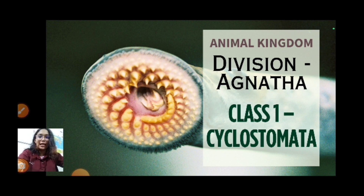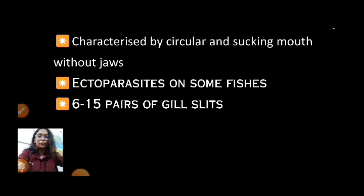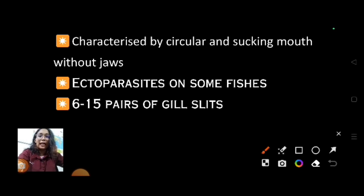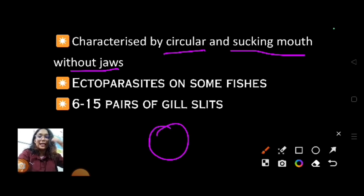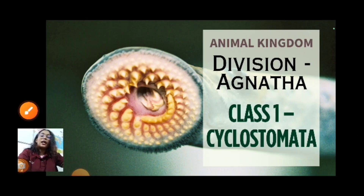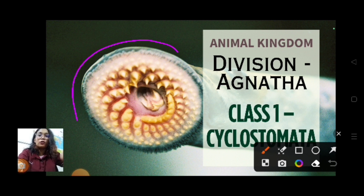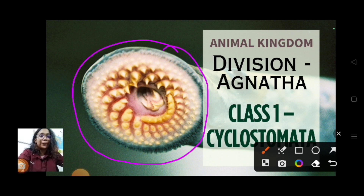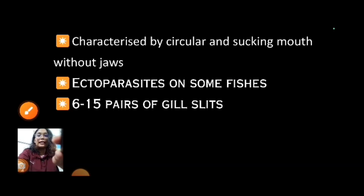The first characteristic feature of Cyclostomata: they are characterized by a circular and sucking mouth without jaws. They are circular in shape, sucking type of mouth, and without jaws. In this diagram you can see the mouth of a Cyclostomata — it is circular, sucking type, and without jaws.